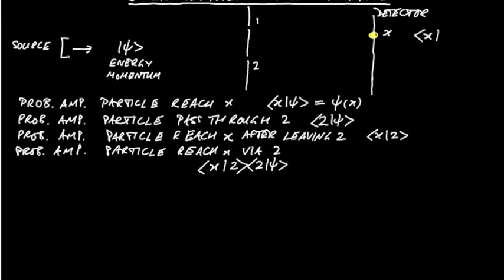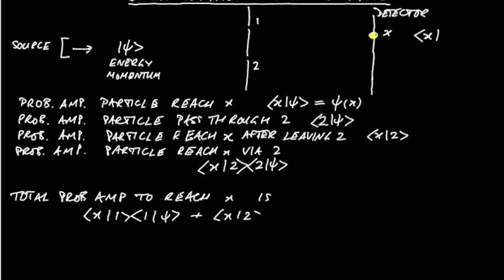We know that the particle has to go through either slit 1 or slit 2, so we could say that the total probability amplitude to reach x is we're going to have ⟨x|1⟩⟨1|ψ⟩, which really I should have written from the right, plus ⟨x|2⟩⟨2|ψ⟩, and that will equal ⟨x|ψ⟩ or ψ(x).